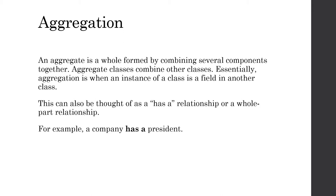An aggregate is a whole formed by combining several components together. In programming, aggregate classes — you can think of these as the whole — are formed by combining other classes, which are the individual components. Essentially, aggregation is whenever an instance of a class is a field in another class, meaning one of the pieces of data in one of your classes is going to be an object of another class. Another way to describe aggregation is with a "has-a" relationship, or a whole-part relationship.